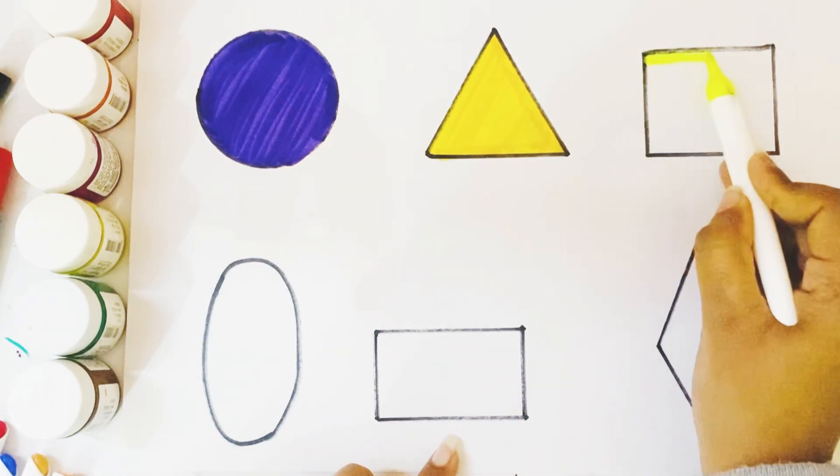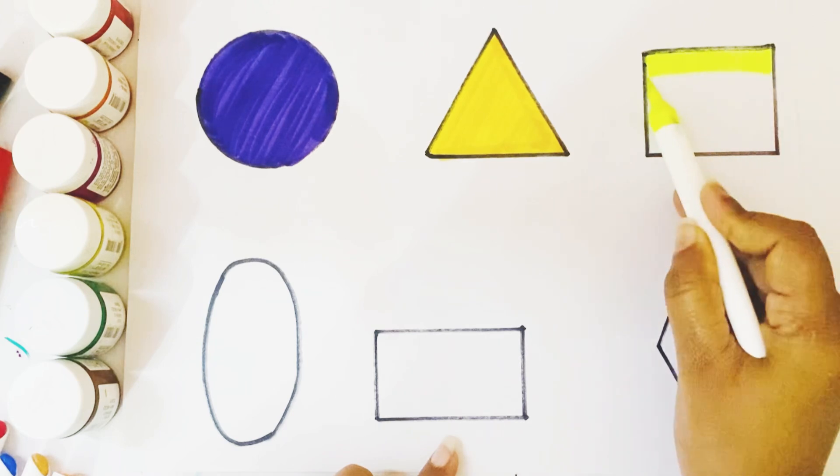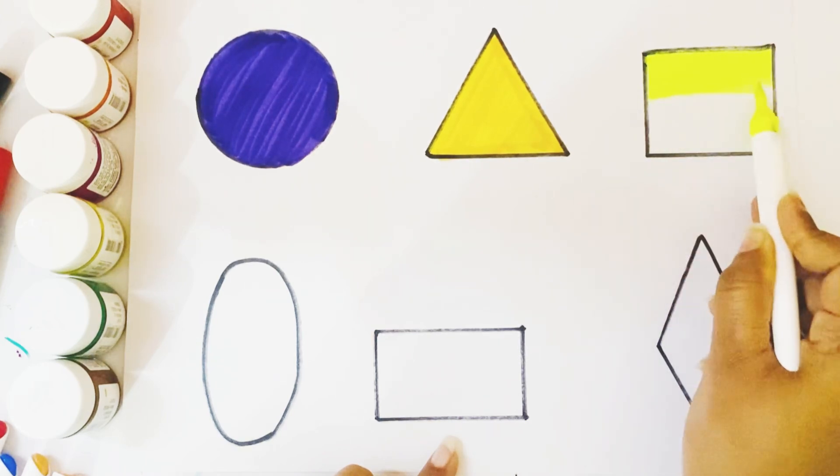Square shape. Neon color. Which color kids? This is a neon color.